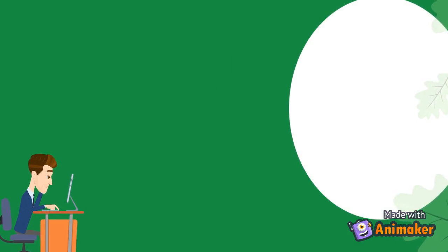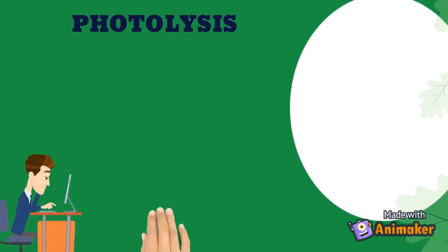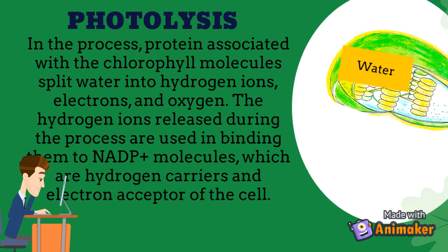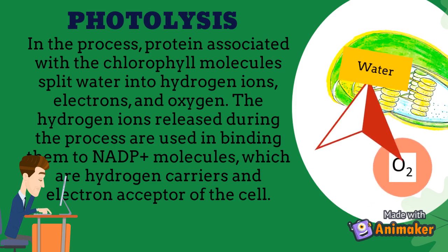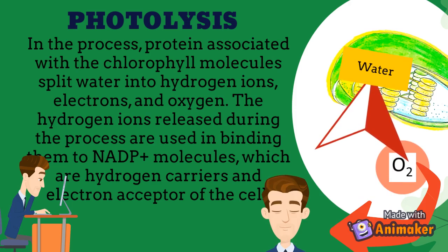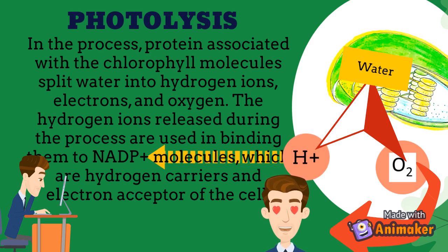The process of photolysis: proteins associated with the chlorophyll molecules split water into hydrogen ions, electrons, and oxygen. The oxygen gas is released into the atmosphere. The hydrogen ions are used in binding them to NADP+ molecules, which are hydrogen carriers and electron acceptors of the cell.